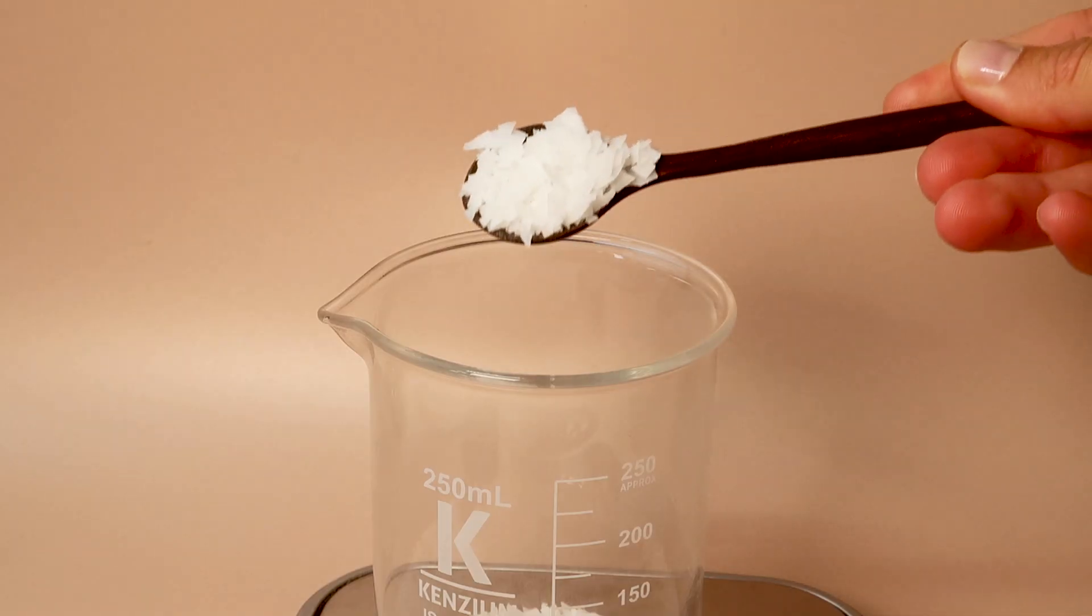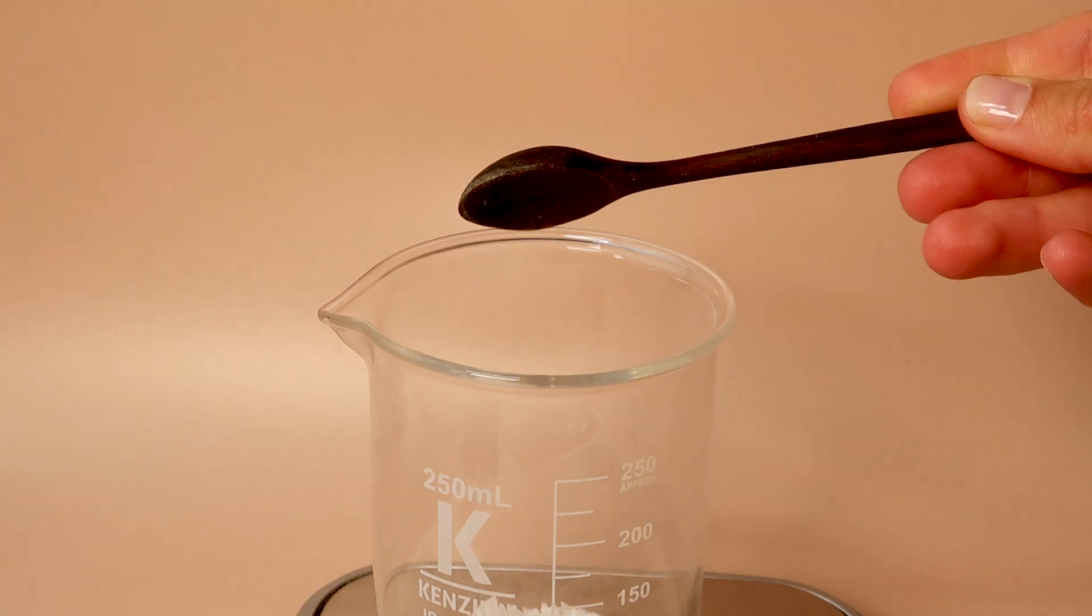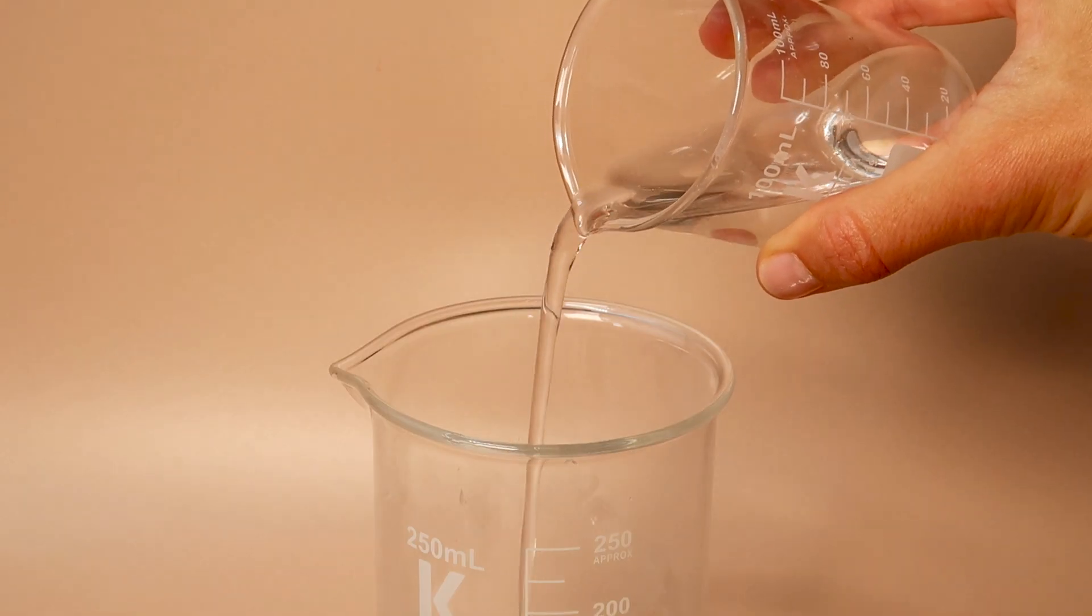Alright, let's get straight into making this! Okay, so first heat your Oliven 1000 along with some water and coconut oil.